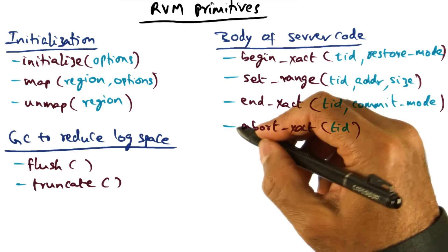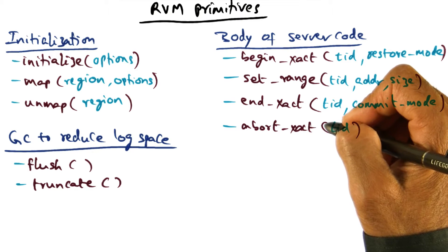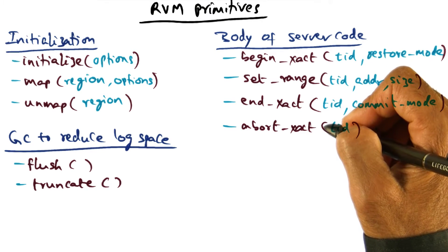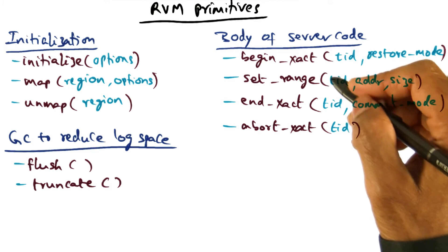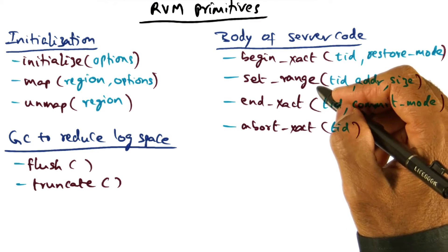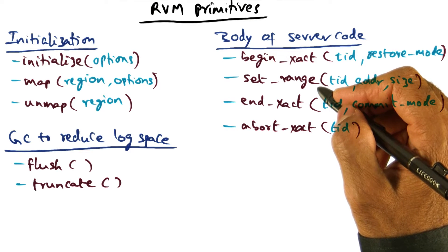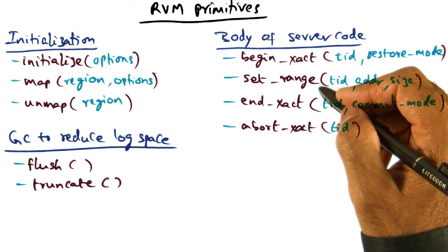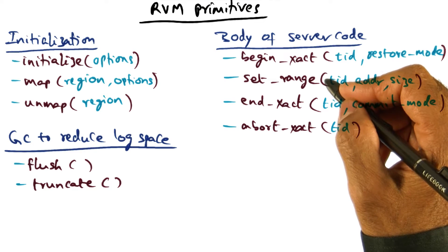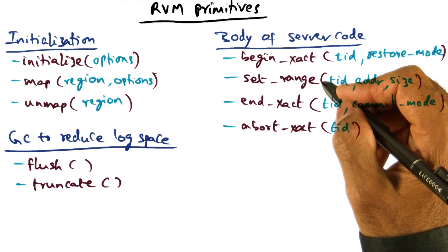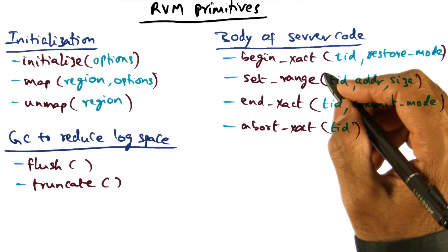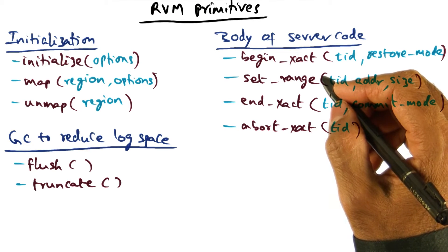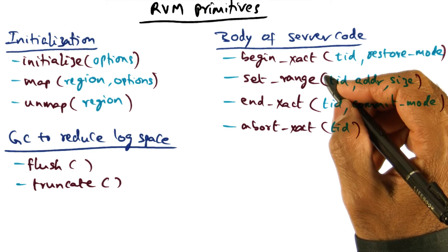On the other hand, if the transaction aborts, then you don't have to commit those redo logs to the disk. The changes made to the persistent data structures — the in-memory versions of those persistent data structures — have to be eventually committed to the external data segments. That part is done lazily by the RVM system. It basically applies the redo logs that have been committed to the disk to the external data segments at opportune moments.